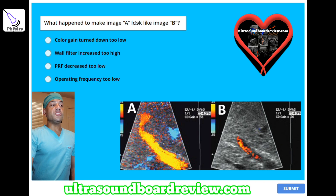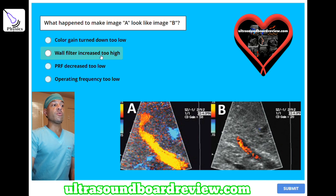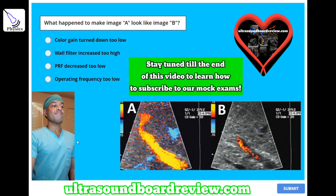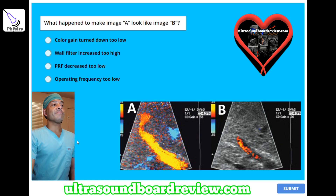What happened to make image A look like image B? A) color gain turned down too low, B) wall filter increased too high, C) PRF decreased too low, or D) operating frequency too low? The answer is A, color gain is turned down too low.